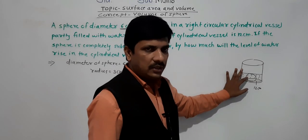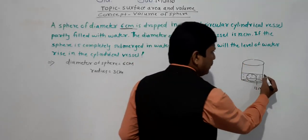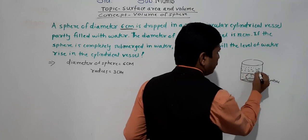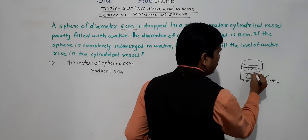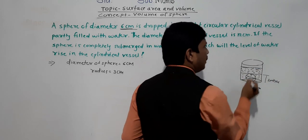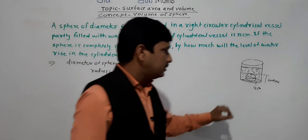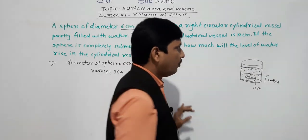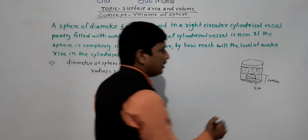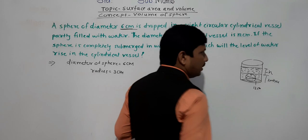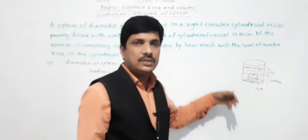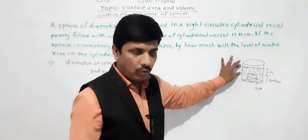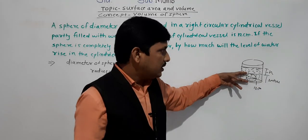When the sphere is completely submerged, the water level will increase. The volume of the sphere equals the volume of the cylindrical portion whose water level has risen. Let the rise in height be h. We have to find the volume of the cylinder with height h and equate it to the volume of the sphere.